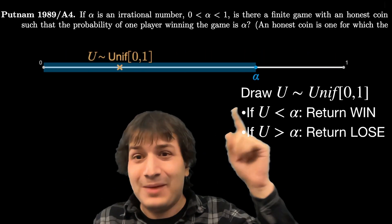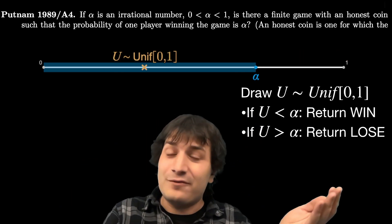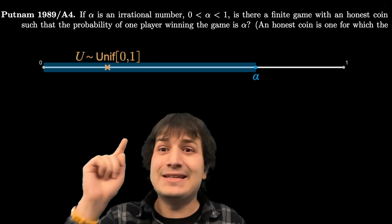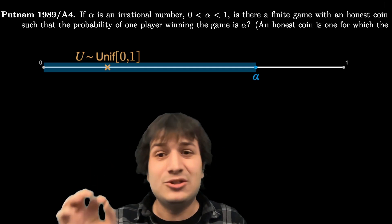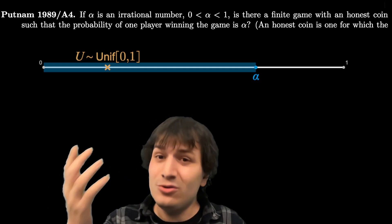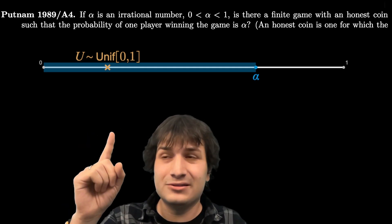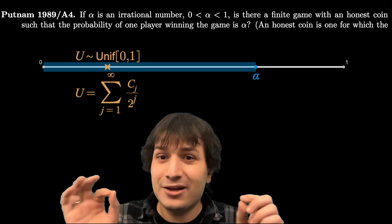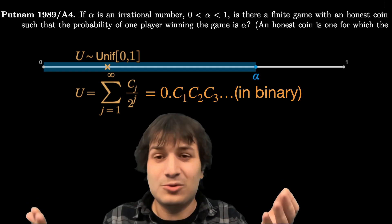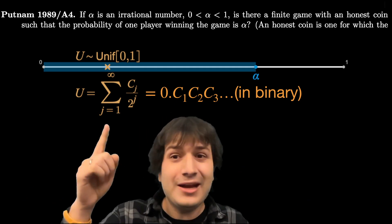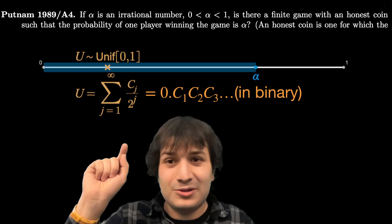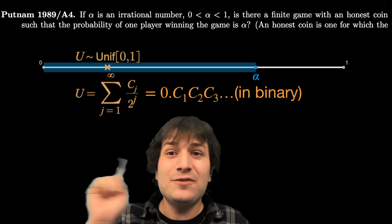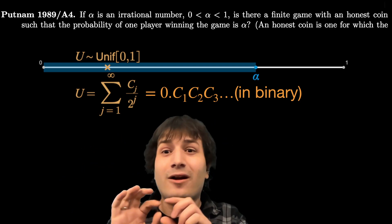We want to make this uniform random variable out of fair coin flips using a binary decomposition. Look at the decimal expansion of the random number u between 0 and 1, but in binary. You can write u as a sum from j=1 to infinity of c_j divided by 2^j. Those c_j's are the binary decimal digits — instead of tenths, hundredths, thousandths, in binary we use halves, quarters, eighths, and so on. The remarkable thing is: if u is uniform, those c_j's are fair independent coin flips.